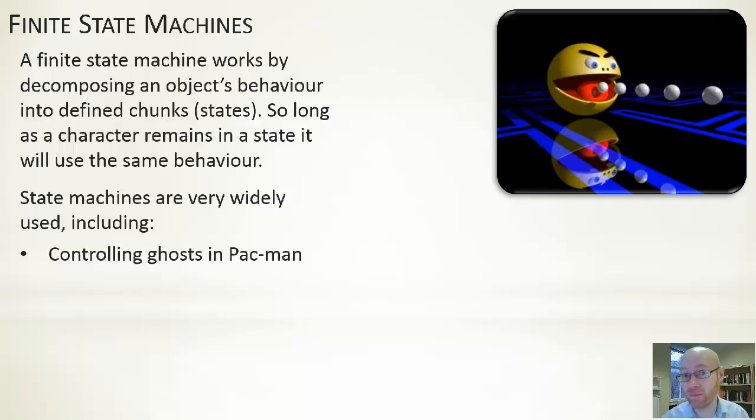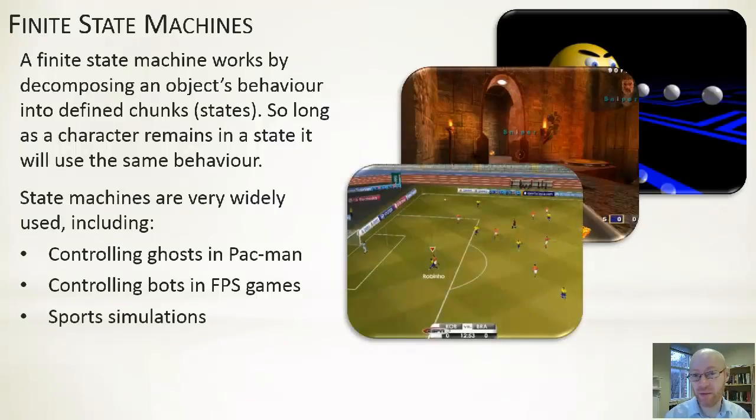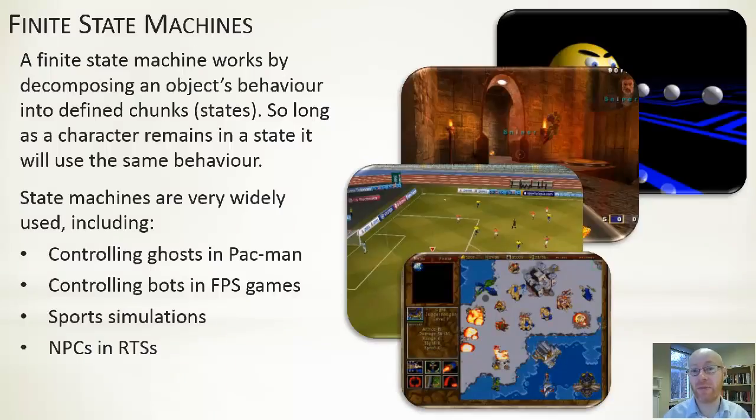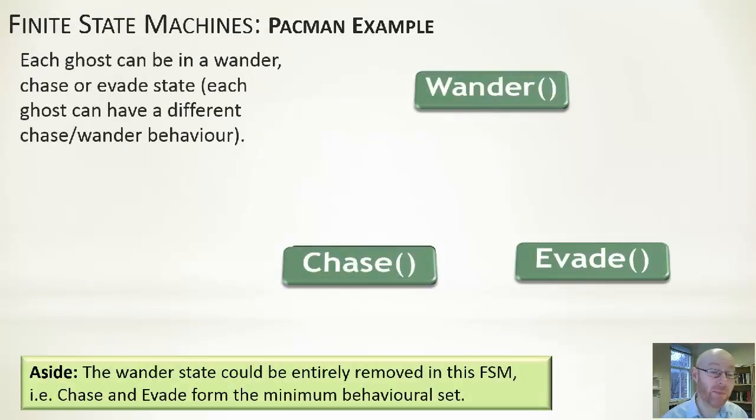So for example, all the way from controlling the ghosts in Pac-Man to some simple bot control in games, to individual player control within sports simulations, or to RTSs. Very flexible, very capable. So we show you an example of Pac-Man. The ghosts can be one of three different states. They can be wandering about the maze. They can be chasing the player, if the player gets sufficiently close. Or if the player picks up a power pill, then they can be evading, running away from the player.